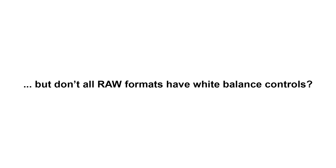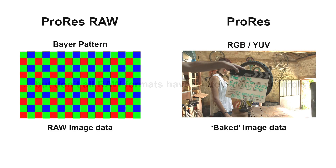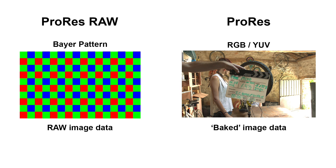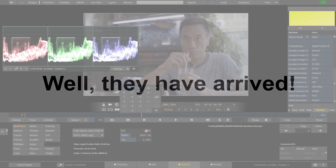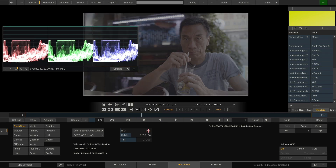Some of you might ask: don't all RAW formats have white balance controls? If ProRes RAW doesn't have white balance controls, how can it be a true RAW format? Well, as we've established, whether or not a format can call itself a true RAW format depends on what kind of data it stores — Bayer pattern or baked RGB imagery. That doesn't change the fact that Kelvin, Tint, and ISO Gain are super helpful parameters when developing a RAW image inside a color corrector or editor. We've listened to our users asking for more control over the ProRes RAW debayer, and now Scratch and Play Pro ship with white balance controls for ProRes RAW.